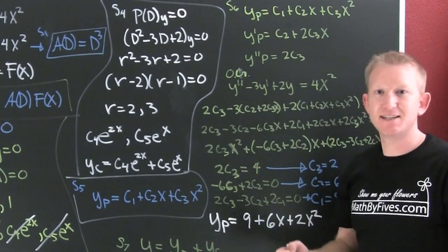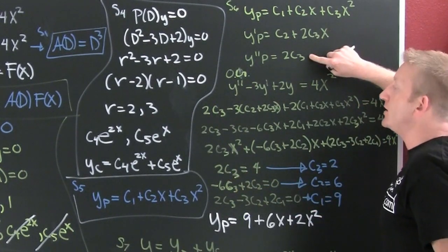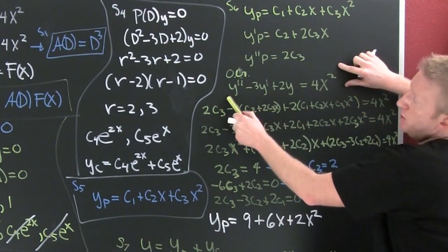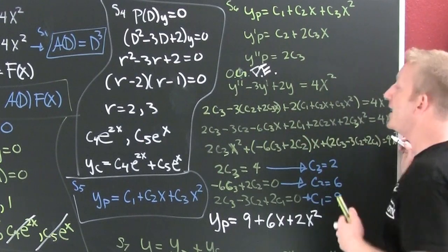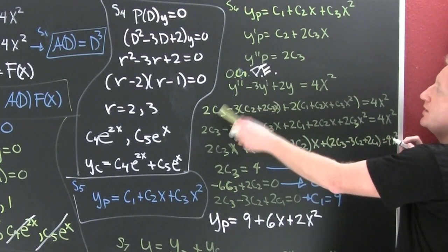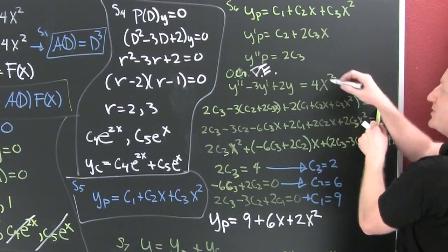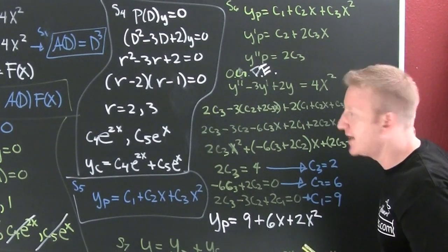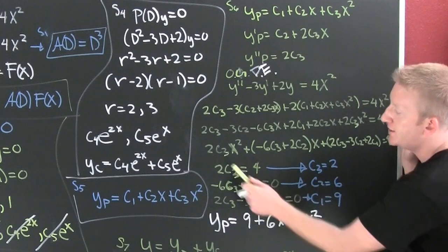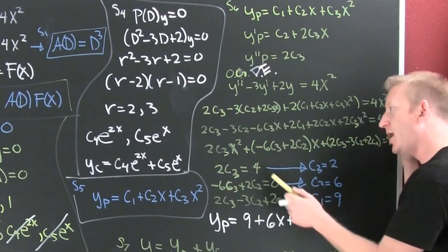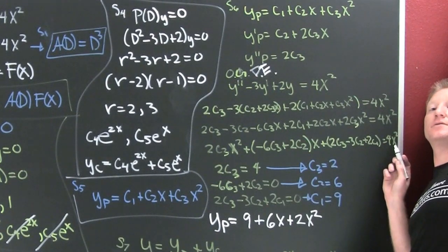To find the coefficients, we plug y_p back into the original non-homogeneous differential equation. To do that we need a couple of derivatives. Recall the original ODE is this equation. We plug everything in, then clean it up. We gather, collect, and combine: all x² terms together, all x terms together, all constants together. That equals 4x² on the right-hand side.